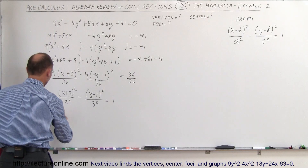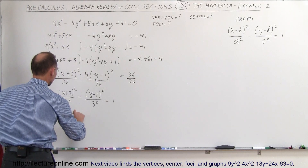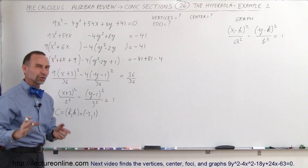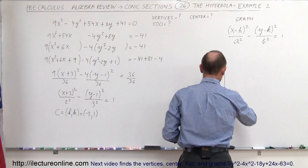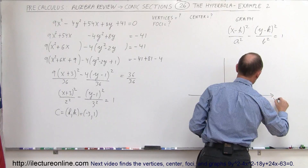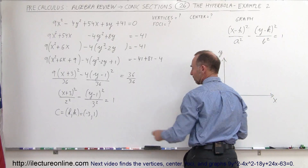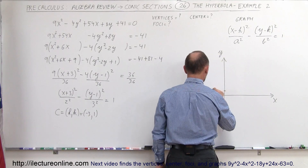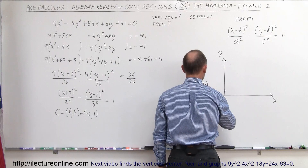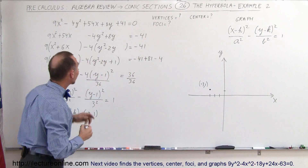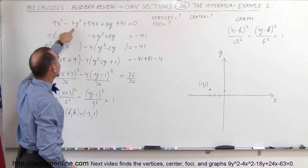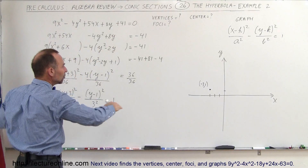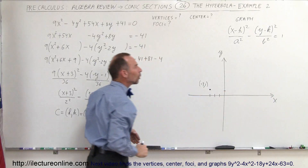What is the center? The center is (h, k), where h equals negative 3 and k equals 1. So we draw the x-axis and y-axis, and the center is at (minus 3, 1). Since the x term is the positive term and the y term is the negative term, the hyperbola opens horizontally, meaning the transverse axis is horizontal.